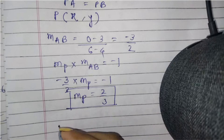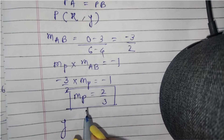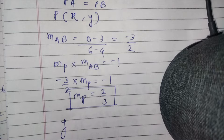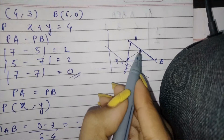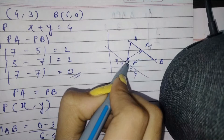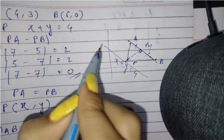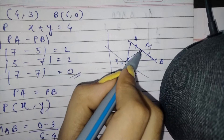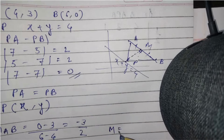So the slope of MP, that is the perpendicular, will be 2/3. Using this data, we can write the equation of the perpendicular bisector of AB. The perpendicular bisector will also pass through the midpoint of A and B, because the perpendicular bisector divides the segment into two equal parts and forms a 90-degree angle.